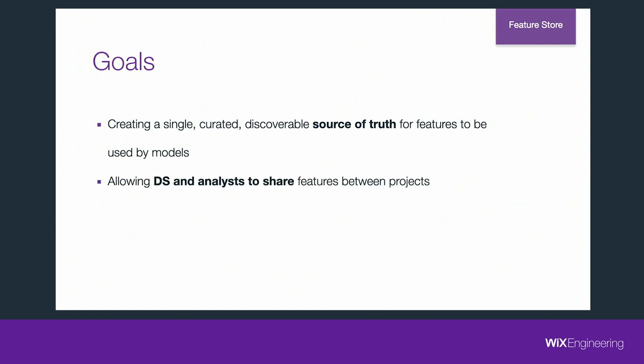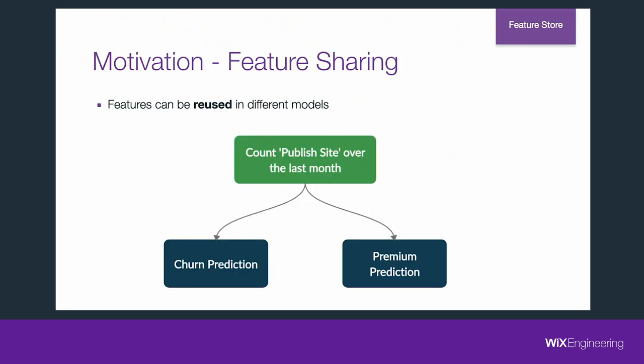So the first thing we set out to solve is creating a single curated, discoverable source of truth for features to be used by models. Second, we want to allow data scientists and analysts to share features between projects. For example, a feature like 'how many times did the user publish his site over the last month' — this engagement feature measuring how much a user interacts with a basic Wix property — is relevant for both churn and premium prediction. A premium user who hasn't published at all might churn. A free user who has published hundreds of times over the last month sounds very engaged and likely to upgrade to premium. We see these types of feature sharing today in churn and premium prediction.